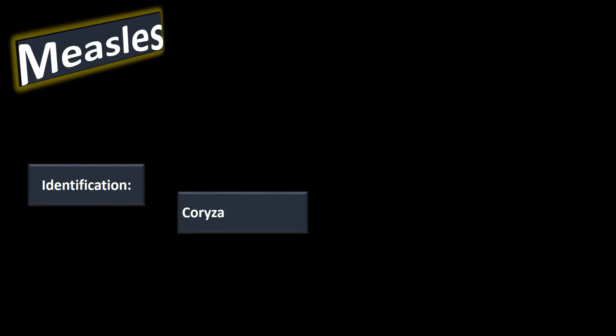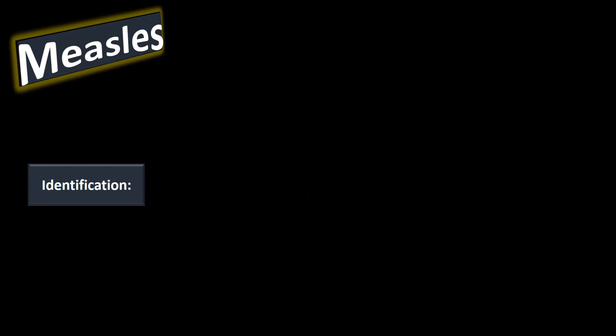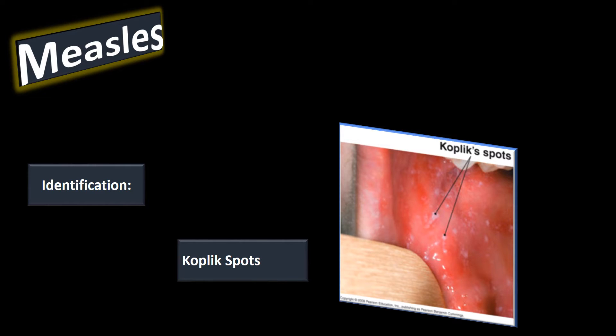Corizoa is another way of saying rhinitis, which is inflammation of the nasal mucosa. So our three C's are cough, conjunctivitis, and corizoa. In the prodromal phase we also get something called Koplik spots.